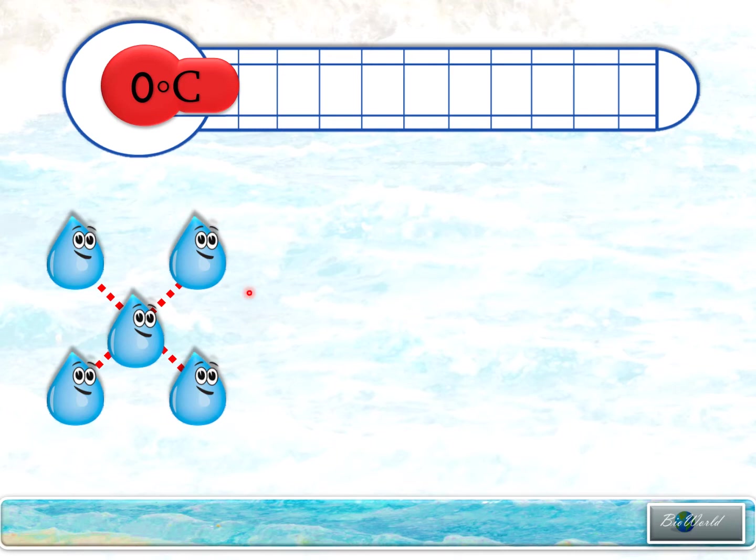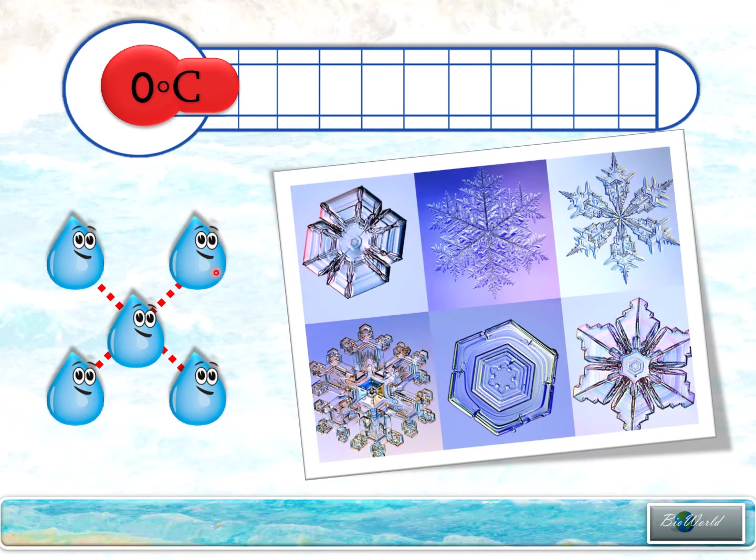Before I continue to discuss the arrangement of water molecules in liquid, I just want to show you examples of the lattice pattern formed by water molecules when in the form of ice. These pictures that you see are actually microscope images of snowflakes. Snowflakes are ice, so these are the lattice patterns formed by the hydrogen bonding. See how beautiful nature can be. But let's not sidetrack - let's return to water in liquid form.